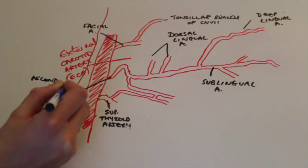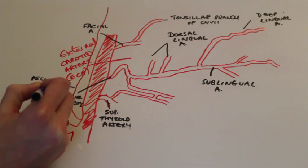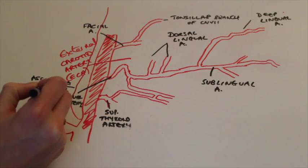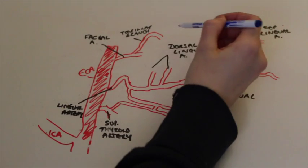The ascending pharyngeal artery also supplies the palatoglossus which if you've watched the first video about the anatomy of the tongue you know that the palatoglossus is one of the extrinsic muscles of the tongue.